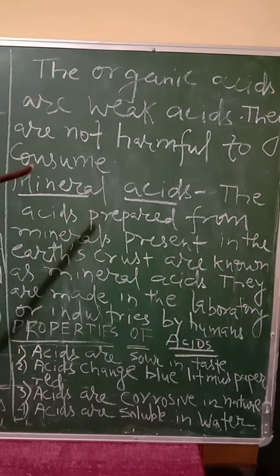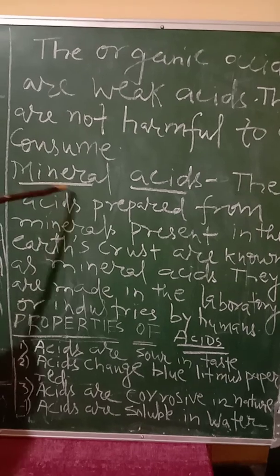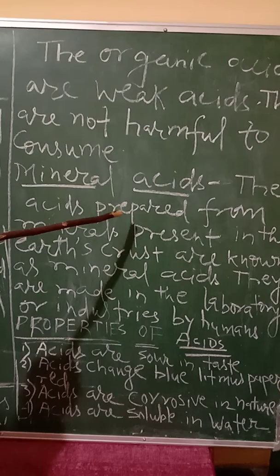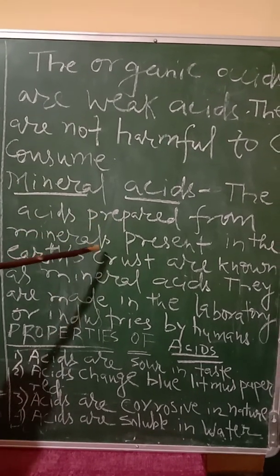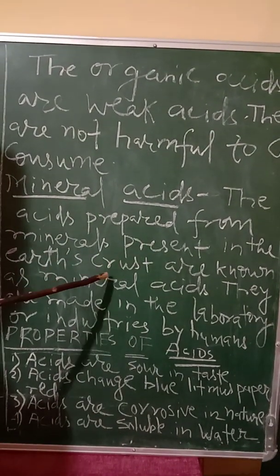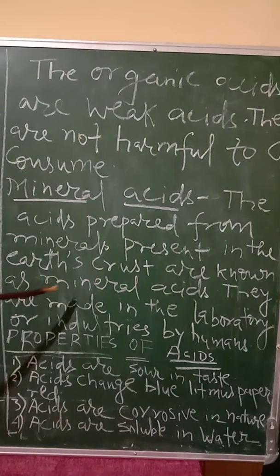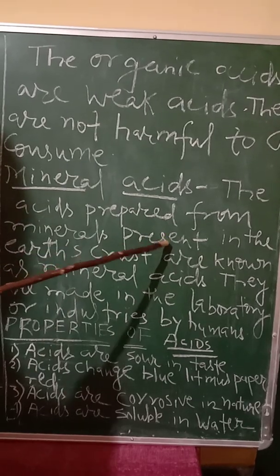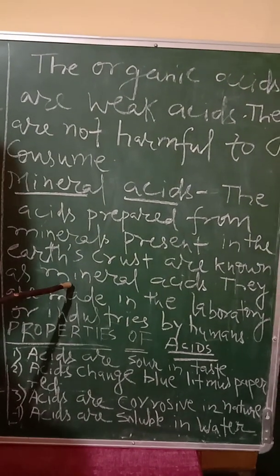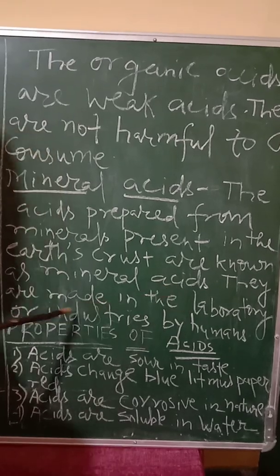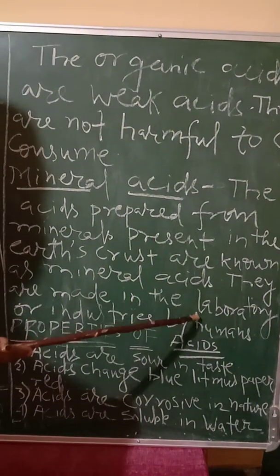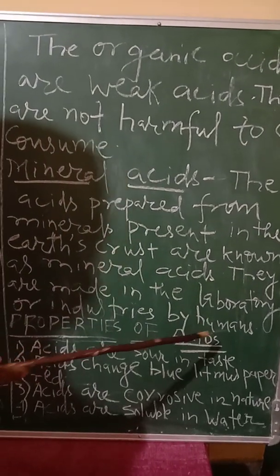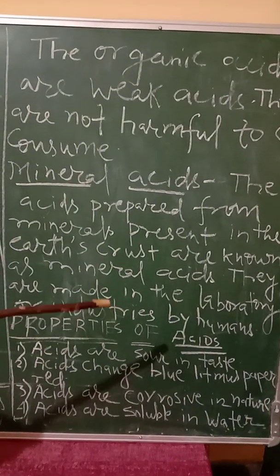Another type is Mineral Acids. The acids which are prepared from minerals present in the earth's crust are known as Mineral Acids. They are made from minerals and are made in the laboratory or industries by human beings.